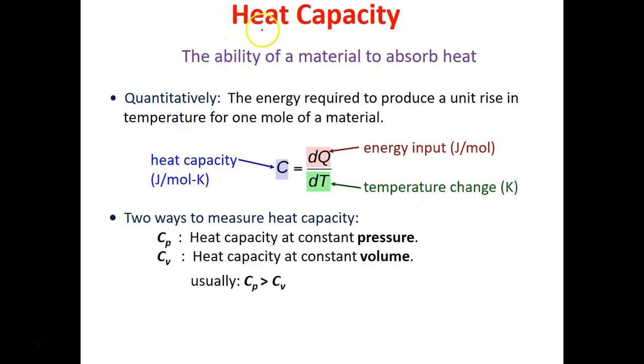I'm sure that all of you are very familiar with this term, heat capacity. This needs no introduction. So heat capacity is the ability of a material to absorb heat. And this is the equation for the heat capacity. The unit is in joules per mole per Kelvin. So this is dQ over dT, and Q is the energy input, while this delta T is the temperature change in Kelvin. So if you know your input energy and your temperature change, you can actually work out your heat capacity.